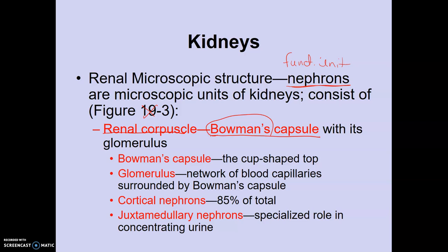The convention these days is to use anatomical terminology rather than a person's name to identify a structure. The renal corpuscle, also called Bowman's capsule, is cup-shaped at the top and holds blood vessels and capillaries. The glomerulus consists of those capillaries surrounded by the capsule itself. There are two types of nephrons: cortical nephrons — 85% of all nephrons — and juxtamedullary nephrons, which are really important for making super concentrated urine.